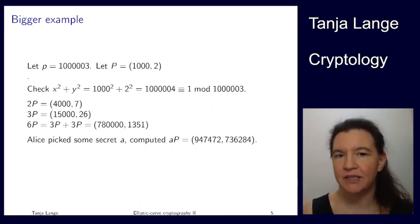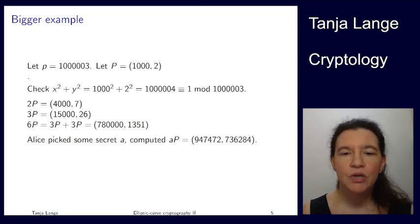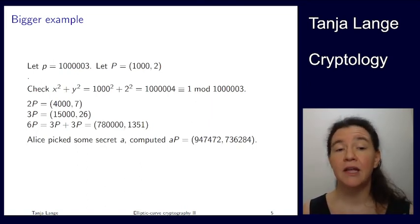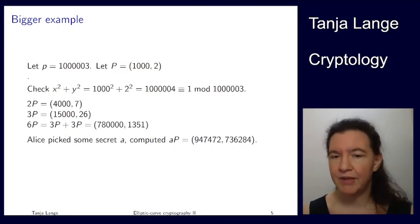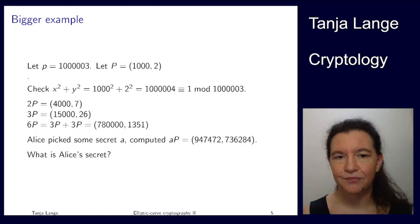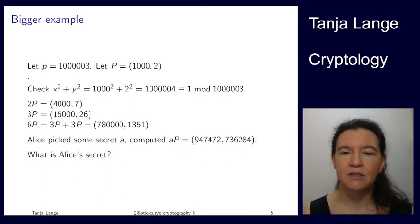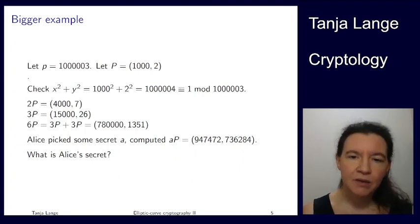And now our Alice here has picked some secret a, computed a times P, and gotten that point. You can convince yourself that it's actually a point on the clock mod 1,000,003, and well, you can maybe figure out what is Alice's secret. I'm not going to tell you what Alice's secret is. I'm going to tell you how Alice did this computation, because it would be very slow for Alice if she had to compute P + P + P + P, because then she would take a steps there.